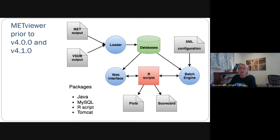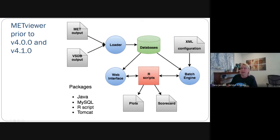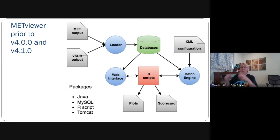So MetViewer, prior to version 4.0.0 and 4.1.0, had this kind of data flow where it reads in both MET output and a legacy output format called VSDB from the Environmental Modeling Center. The loader would then load the data into the database, which was typically a MySQL database. The user could either put together XML configuration files to pass into the batch engine and generate plots, or use the web interface to specify the XML configuration files. All of the plotting and computations for statistics were done by R statistics scripts. It generates plots as well as scorecards, which is basically a synthesis of lots of different statistics in a table format. That viewer was based on Java, MySQL, R script, and Tomcat.